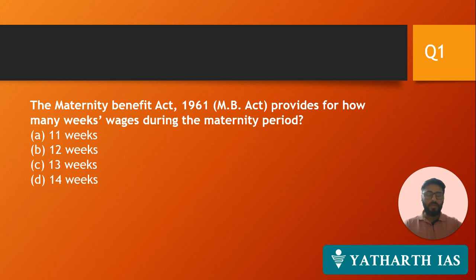However, there are a few catches: the number 26 shall be restricted to only two children. If someone wants to avail maternity benefit for the third child, the number shall continue to be 12. Further, in case the woman is an adopting mother or a commissioning mother going for surrogacy, the benefit available shall be only 12 weeks and not 26 weeks. If the question is asked in the same manner as stated, the answer shall be 26 weeks now.